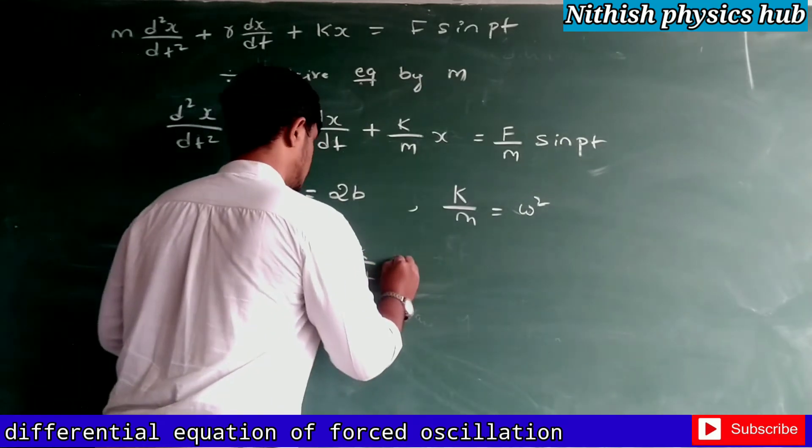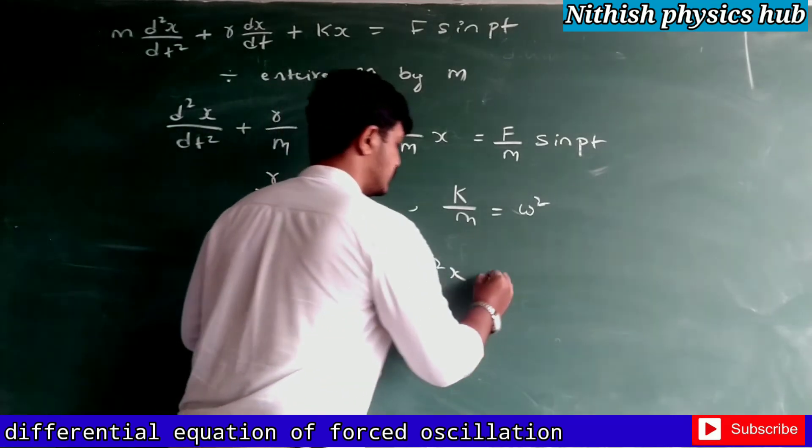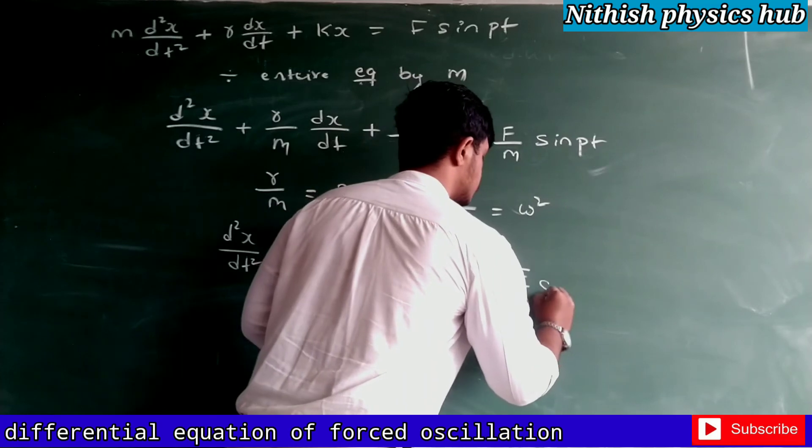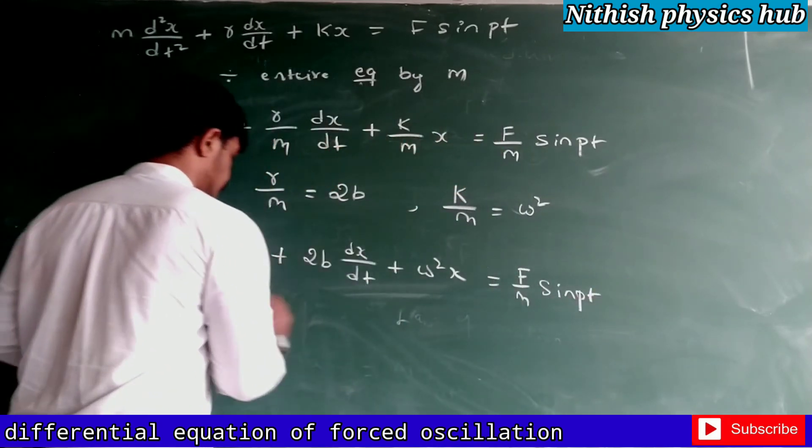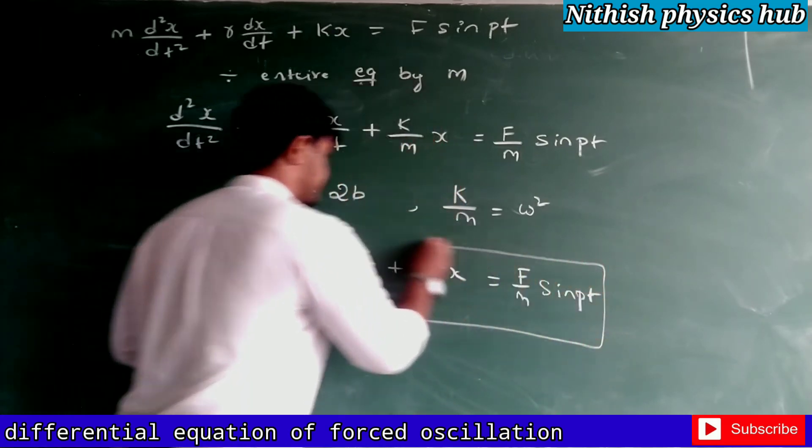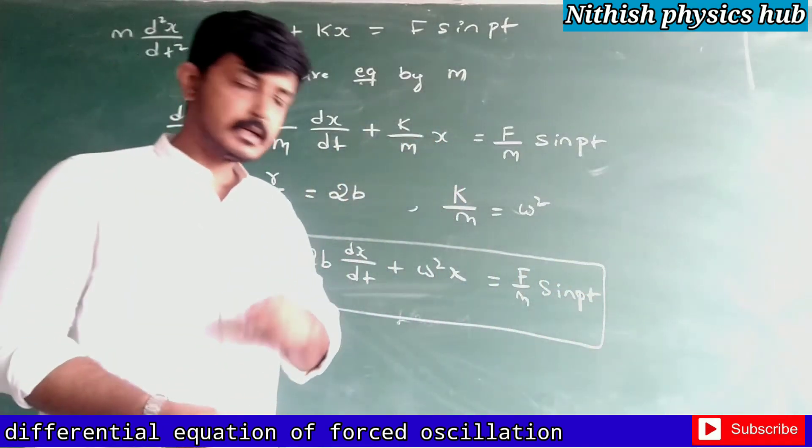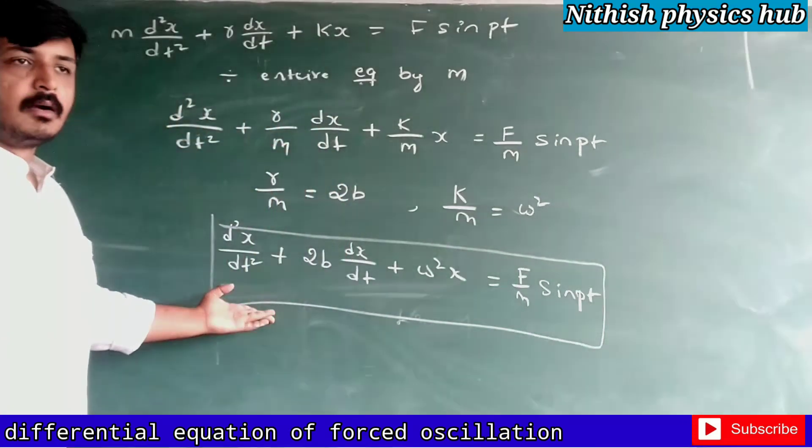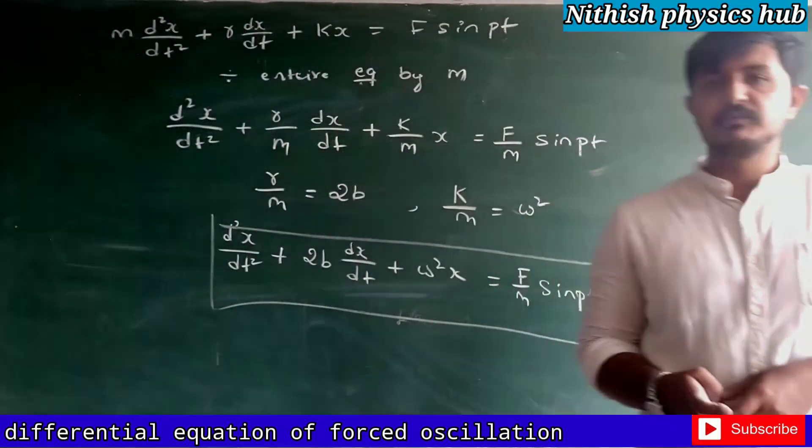I can write: d²x by dt² plus 2b dx by dt plus ω²x is equal to f by m sin pt. So this equation will represent the differential equation of forced oscillation.